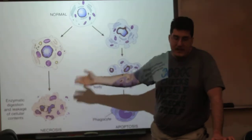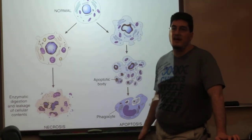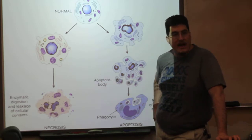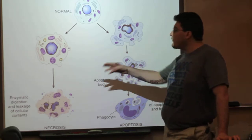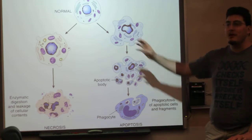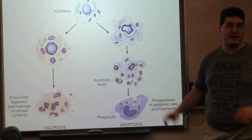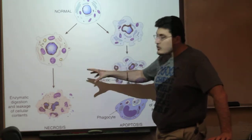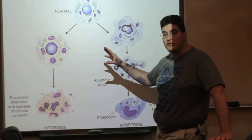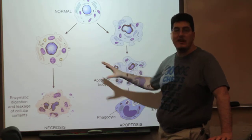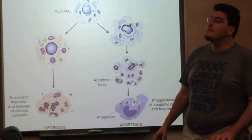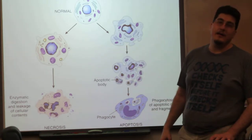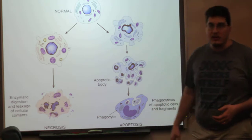These enzymes all leak out into the extracellular space where there are proteins and other things you really don't want damaged. Internal workings of the cell are not supposed to be made public, and now we have a problem. Internal cellular contents are going to cause damage to the extracellular environment and to neighboring cells — the neighbors are going to be injured by this cell's death.